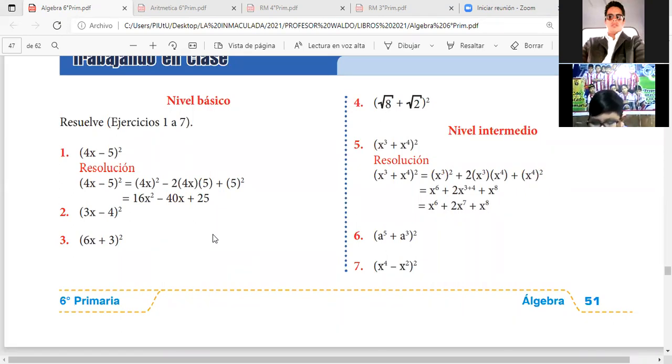Vemos aquí un binomio de diferencia al cuadrado. Aplicamos lo que ya hemos visto y decimos que esto va a ser igual al cuadrado del primero, que es 3X. Entonces será 3X elevado al cuadrado. Luego será 2 multiplicando a 3X y multiplicando a 4. Sabemos que como hay una diferencia, los signos van alternados.